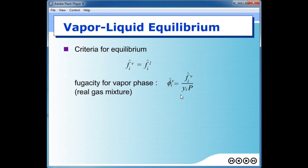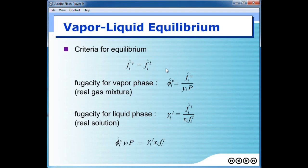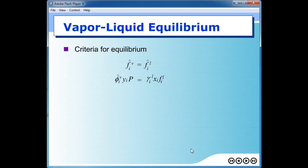The fugacity coefficient is derived this way. On the other hand, on the right-hand side, the liquid phase is a real solution, so we derive the activity coefficient like this. If we rearrange the equation to get fugacity in vapor and fugacity in liquid and plug into the top equation, we get this equation — a generic equation for equilibrium of vapor and liquid for any kind of mixture.